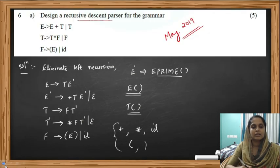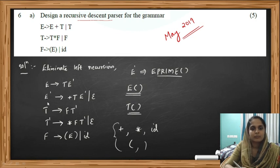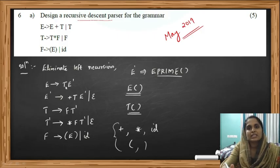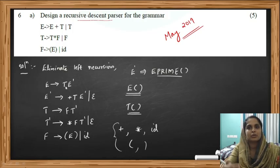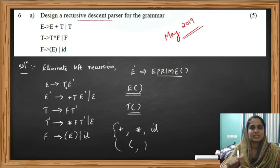We have now written procedures for all the variables. This is how you design a recursive descent parser for a given grammar. For each procedure, check what is on the right hand side. If there is more than one term, write if-else portions. Whenever you see a variable, call the procedure for that variable. If you see a terminal, check if the input equals that terminal and if so, increment the input. Hope you have understood it — if you have any doubts, put them in the comment section. Thank you.